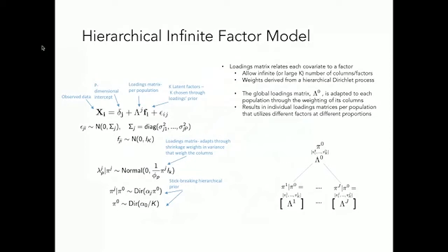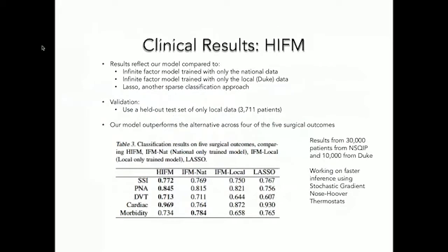We find this hierarchical infinite factor model generally does much better for prediction compared to just using the national database, just using the local database, or just using a LASSO logistic regression. One thing we're currently working on is speeding the algorithm up to handle even more data from these really large national databases — we're looking at using stochastic gradient Nosé-Hoover thermostats.